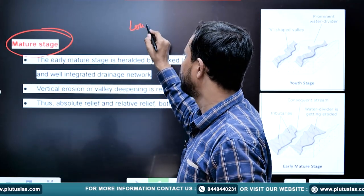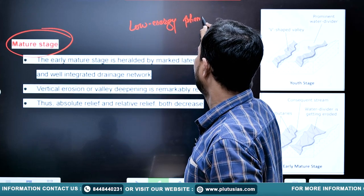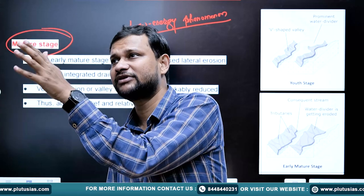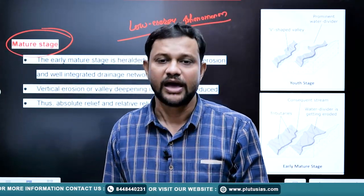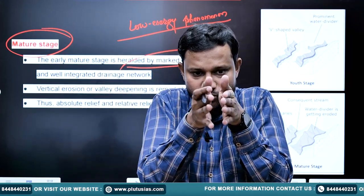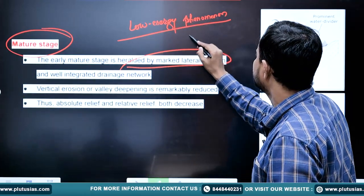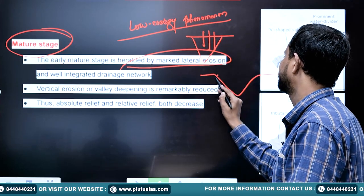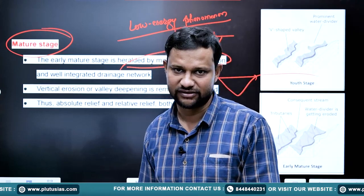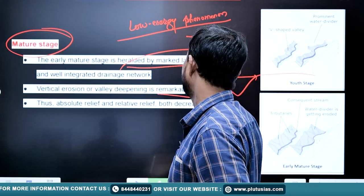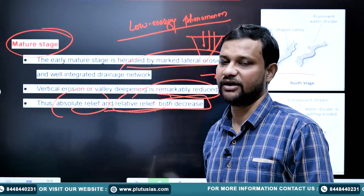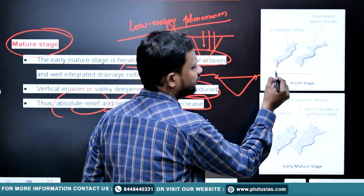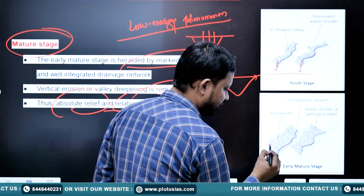In the mature stage, the intensity of erosion decreases and low energy phenomena dominate. The river undergoes incremental deposition and absolute relief decreases. This stage is heralded by lateral erosion — the broadening or widening of the stream. Vertical erosion means the surface is eroded vertically downward, while lateral erosion means the river widens its valley. In this stage, lateral erosion or valley incision is remarkably reduced, and both absolute and relative relief decrease as the elevated landform starts to lose height.